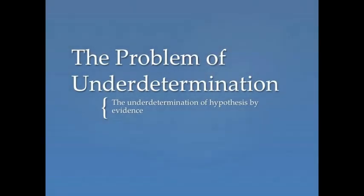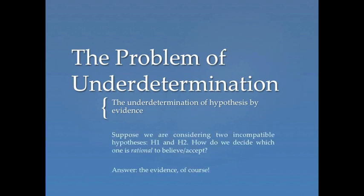This week we're considering the problem of underdetermination, otherwise known as the underdetermination of hypothesis by evidence. It's a really interesting problem in the philosophy of science that concerns ultimately the rationality of scientific practice. We're really interested in the question: how do we rationally decide between competing theories? Why do we pick one over the other?